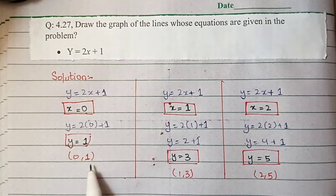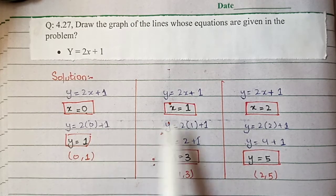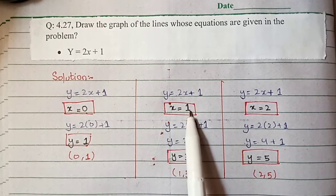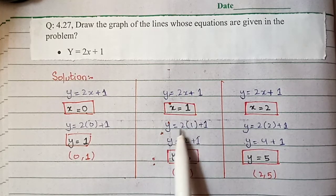For Y = 2x + 1, let x = 1. Then Y = 2(1) + 1 = 3.